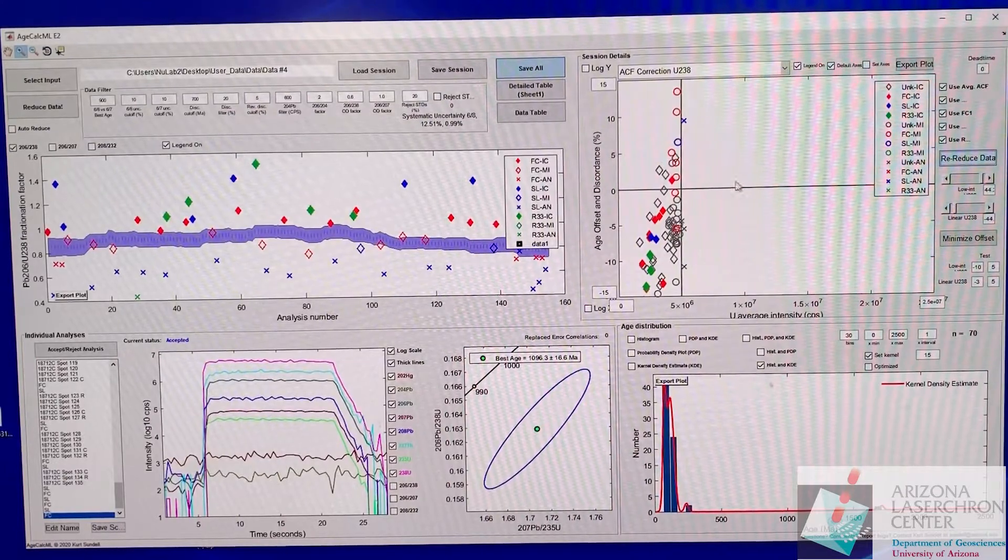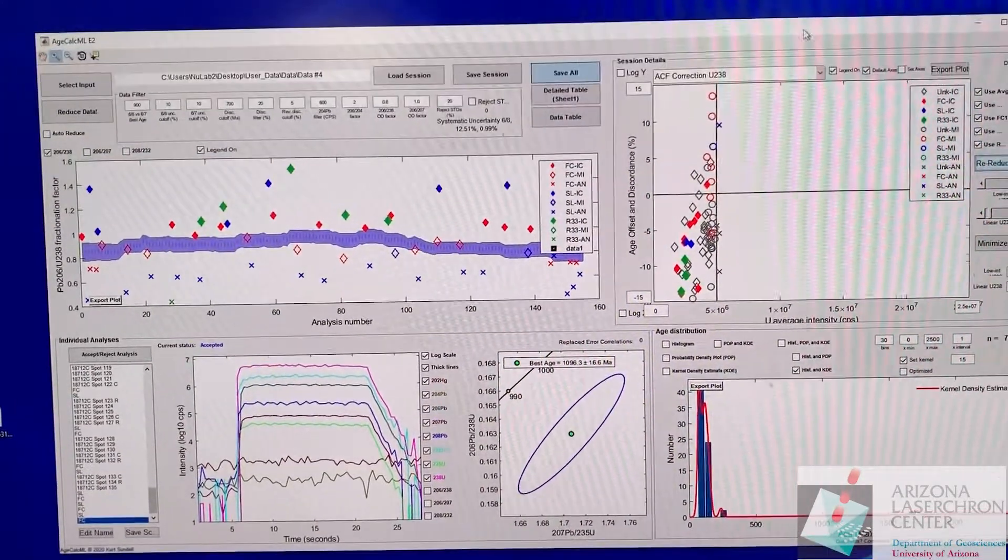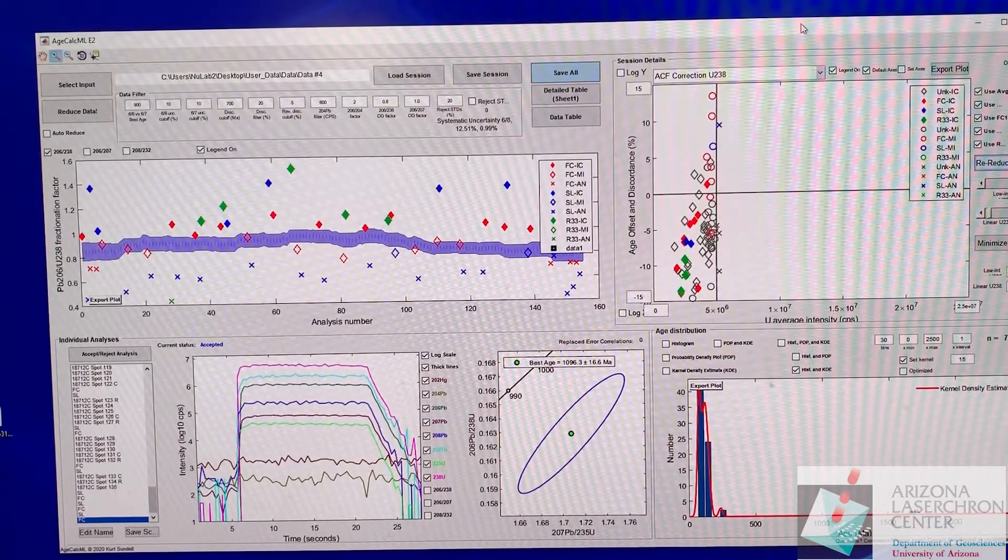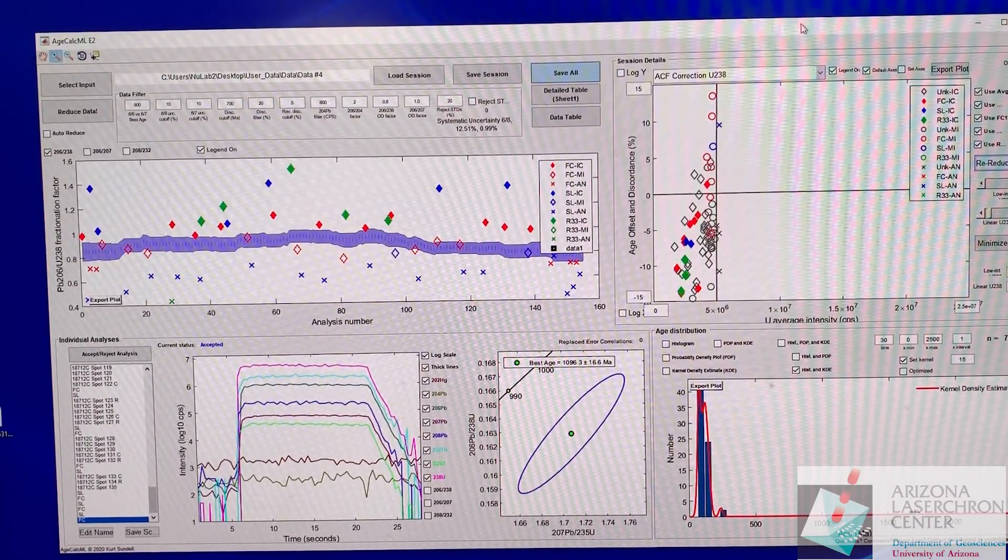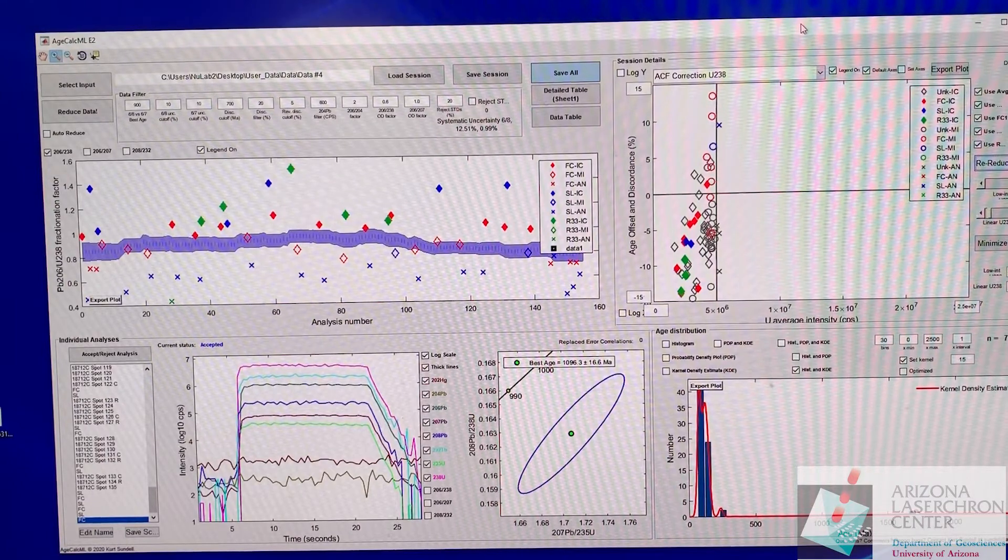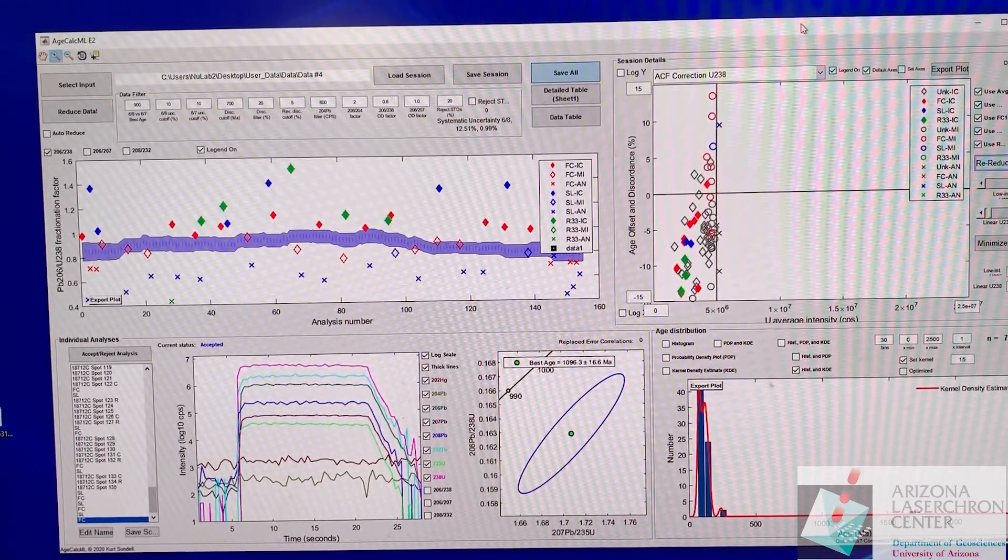Obviously this looks pretty bad. So anyways that's how you use, that's kind of a just a bare bones first go at reducing uranium lead data in AgeCalcML from the Thermo Element 2.